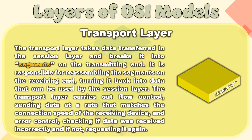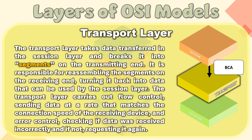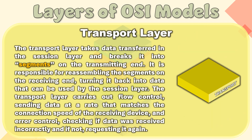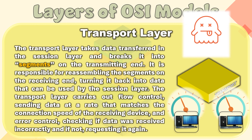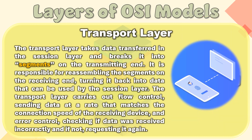Layer 4 – Transport Layer. The transport layer takes data transferred in the session layer and breaks it into segments on the transmitting end. It is responsible for reassembling the segments on the receiving end, turning it back into data that can be used by the session layer. The transport layer carries out flow control, sending data at a rate that matches the connection speed of the receiving device, and error control, checking if data was received incorrectly, and if not, requesting it again.